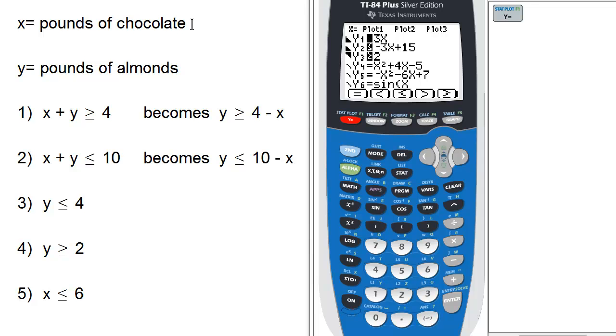So now we're going to translate the word problem into sets of equations. First, we'll let x equal the pounds of chocolate, y be the pounds of almonds, and then the five inequalities.